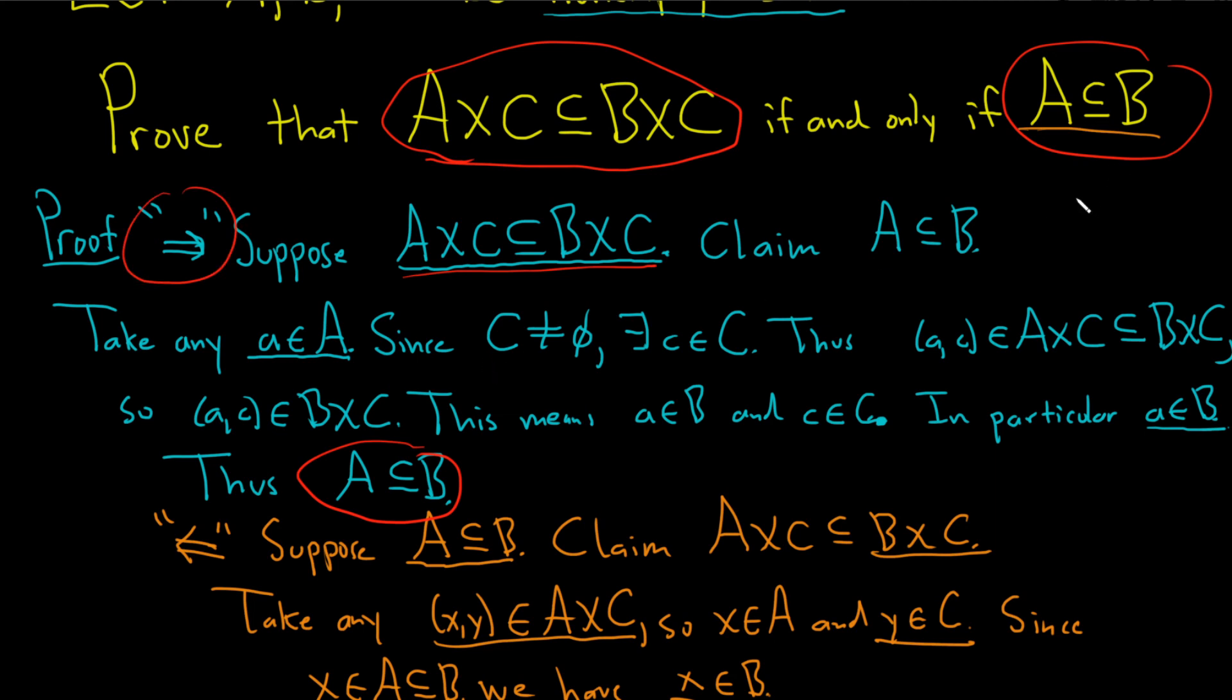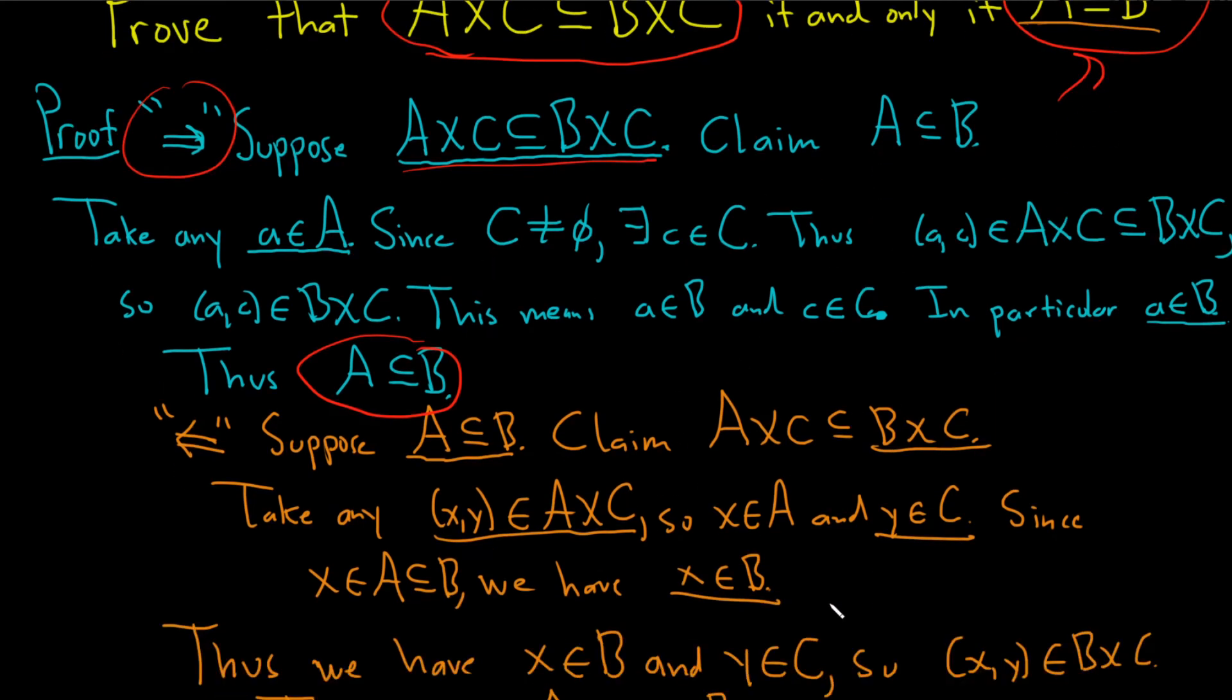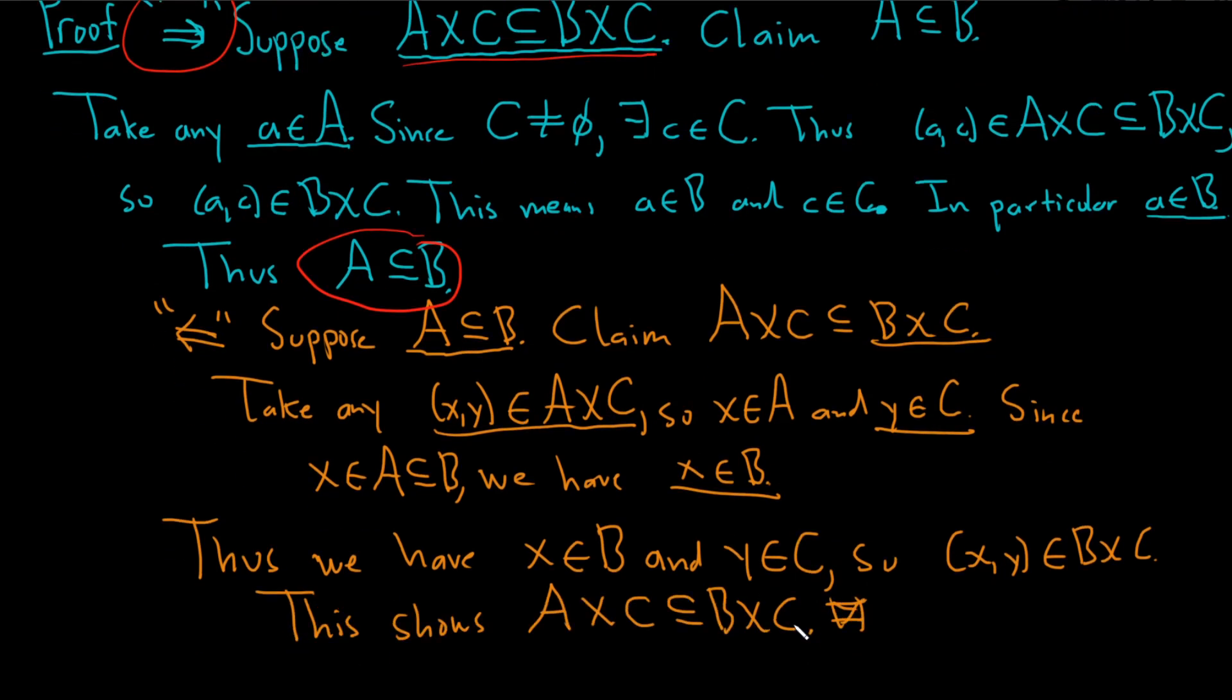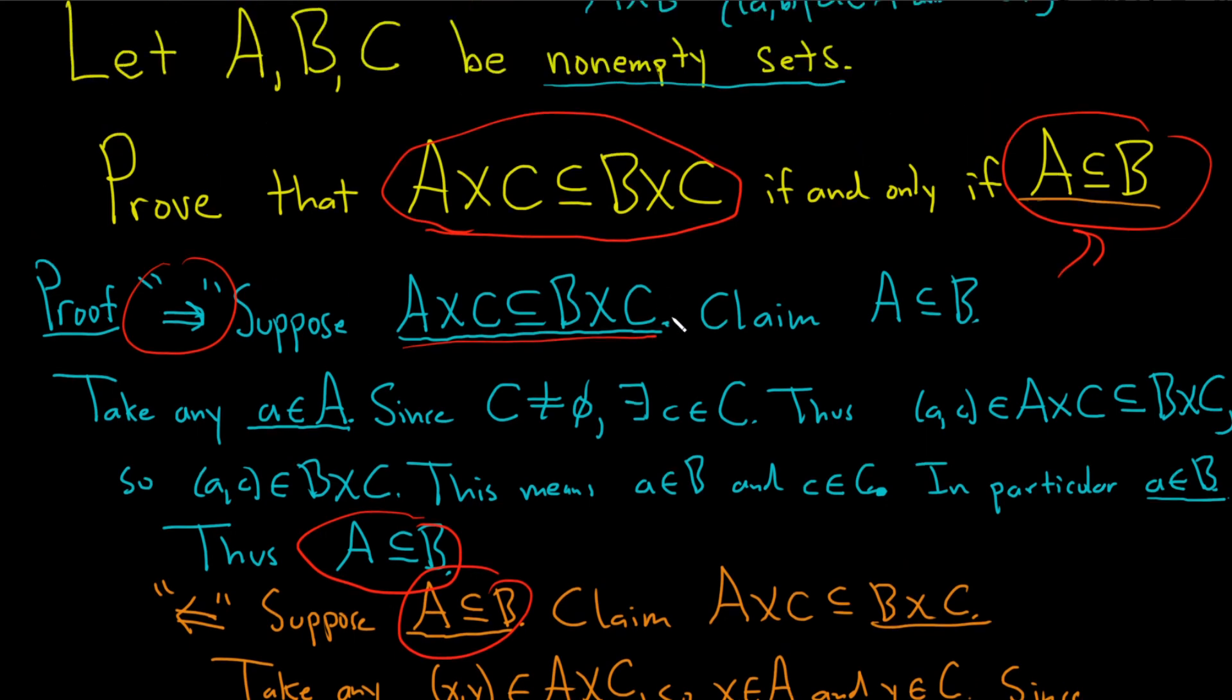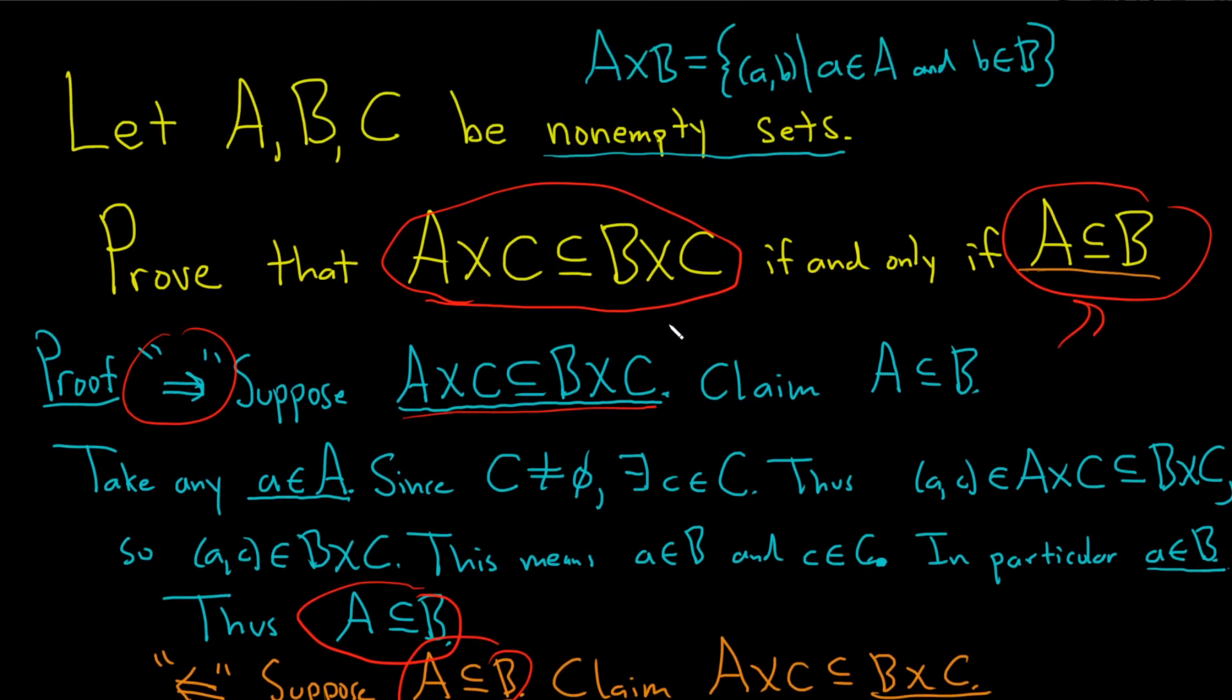Going the other way, we assume this was true, followed a series of steps, and then we arrived at this statement here, this one here. So we assume this was true, we showed this was true, which is exactly what we had to do. So you assume this is true and show this is true. I hope this video has been helpful to you in some way. Good luck.